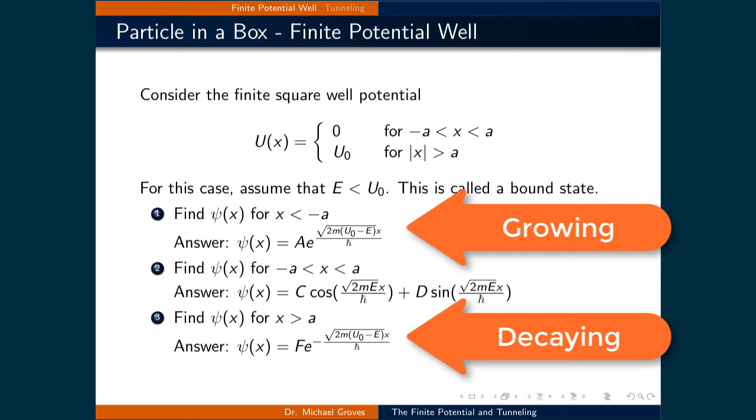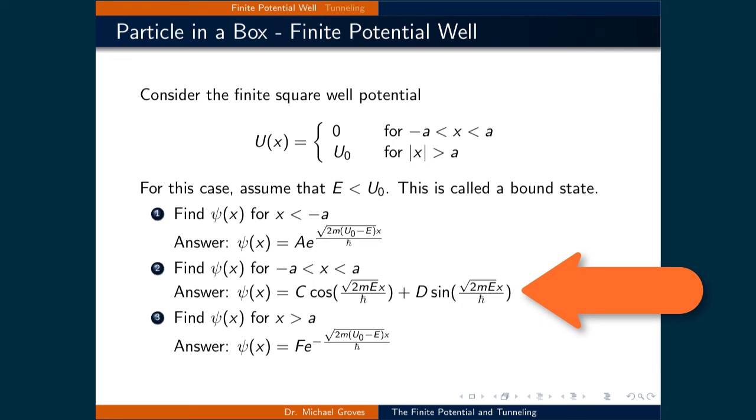The solutions for the three regions are a growing and decaying exponential in regions 1 and 3 respectively, while inside the well, psi is a combination of sine and cosine functions.